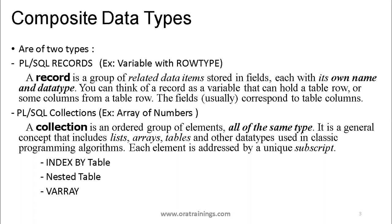In PLSQL, we have two kinds of data types. We have the basic data types like number and varchar. Apart from those, we have a different kind called composite data types. A composite data type is essentially a variable which can hold multiple values. These composite data types are further divided into two types: one is PLSQL record, and the other is called collection.